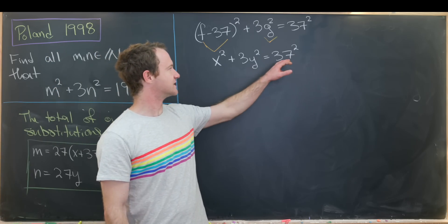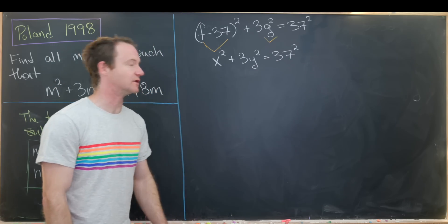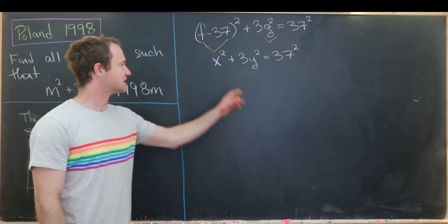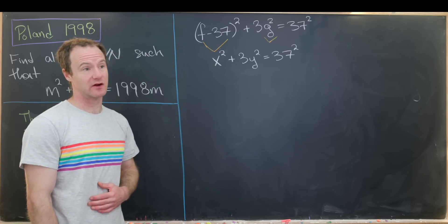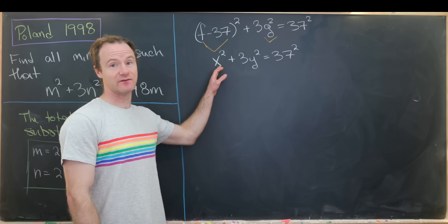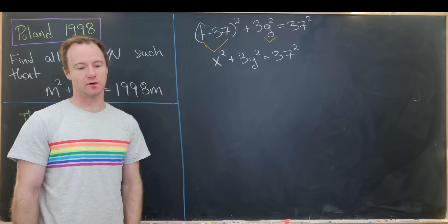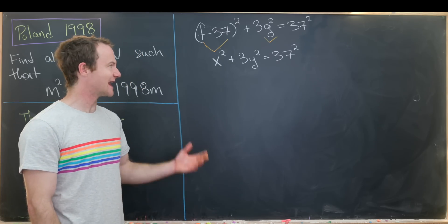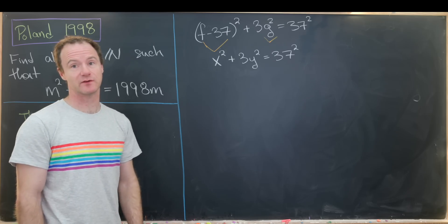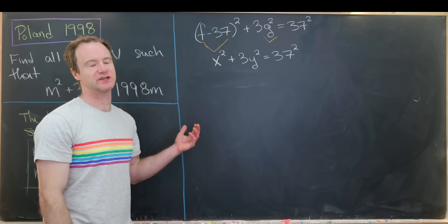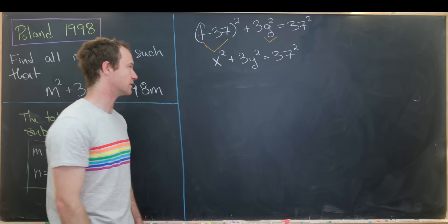But now we're down to an equation which is actually pretty easy to guess and check. First of all, let's notice that the right hand side of this equation is odd. So that means that x squared and y squared have to have opposite parity. So in other words, x is even or odd and then y is odd or even. So that actually cuts down a lot on the number of choices that you have to make.